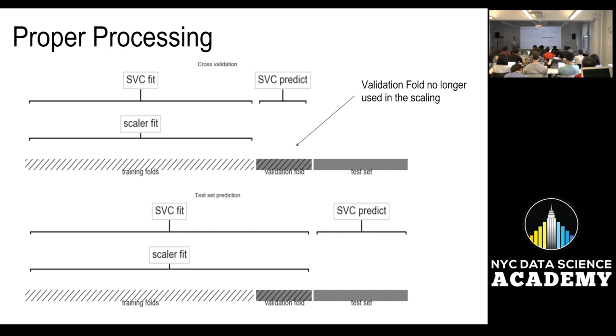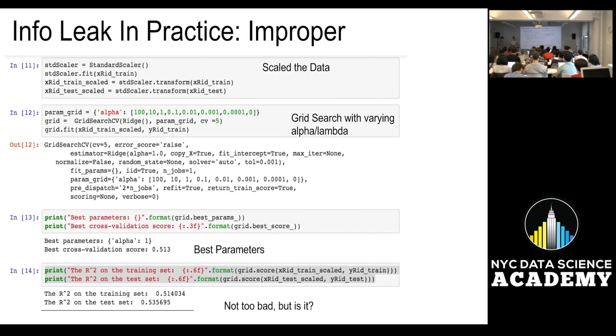This is an example of proper processing. You no longer have the validation fold used in your scaling. So you have information leakage, which is vital and important, because you can start to get, see correlations that are not really true or in existence. So I did a quick example of this using Python, so bear with me. There's a lot of code here, so I'm going to slow it down. So what you can see here is we've scaled our data. We scale our data according to the training set. We've transformed both the test and the training data accordingly.